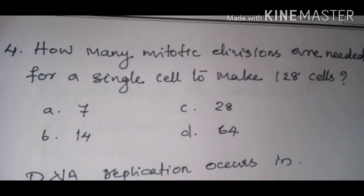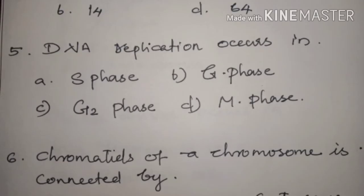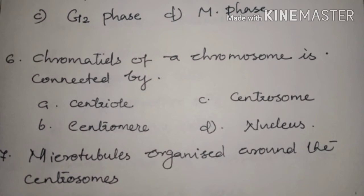How many mitotic divisions are needed for a single cell to make 128 cells? Answer: Option A, seven. DNA replication occurs in — Answer: Option A, S phase.